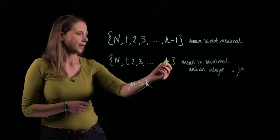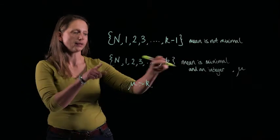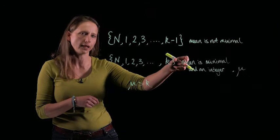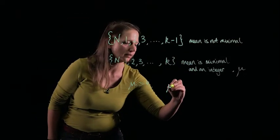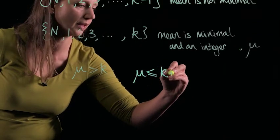Okay. If I add the next number in, k plus 1, this is the minimal mean. So the mean can't get any smaller. When I add in k plus 1, the mean is at least as big. And this means that the mean has to be less than or equal to k plus 1.